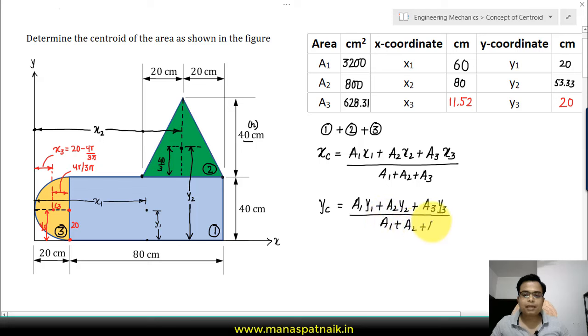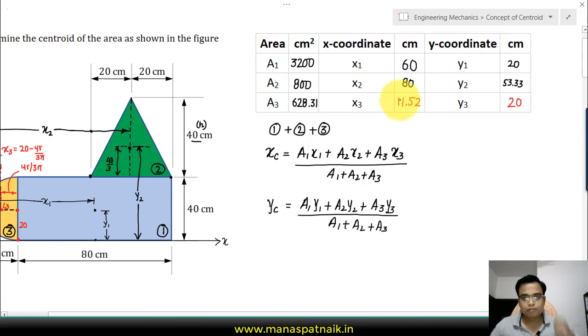You have all the values of areas, x-coordinates, y-coordinates from this table. You can put them up over here and the final value of the x and y coordinate of the centroid is 56.87 centimeters and 25.76 centimeters.